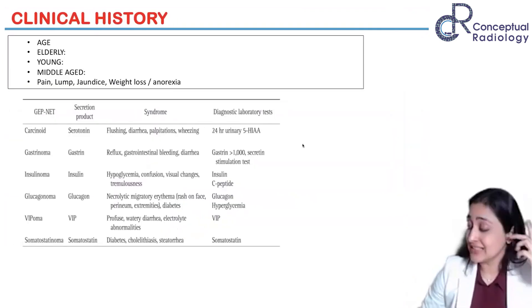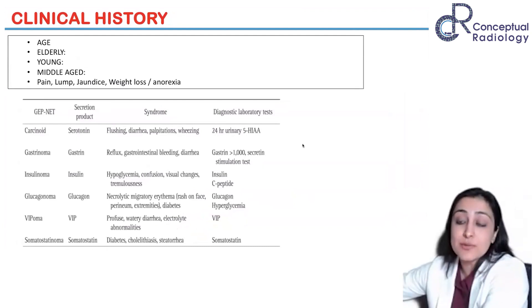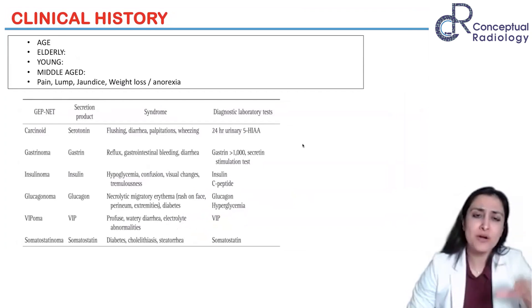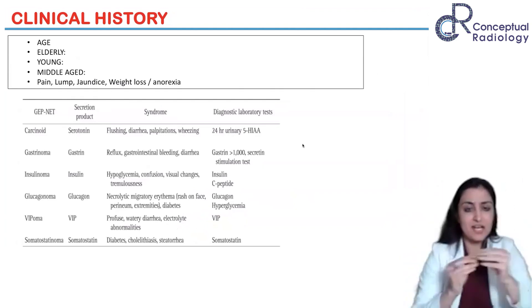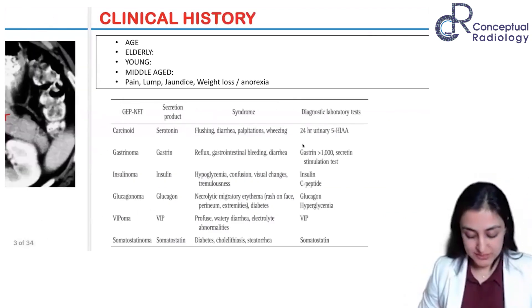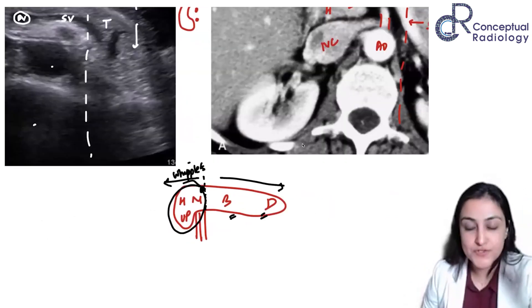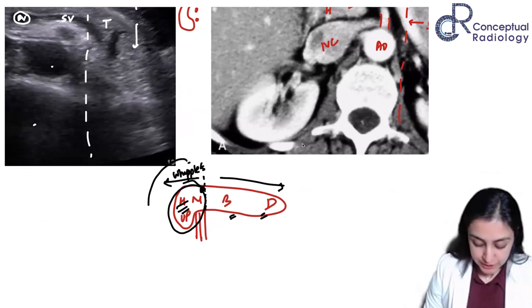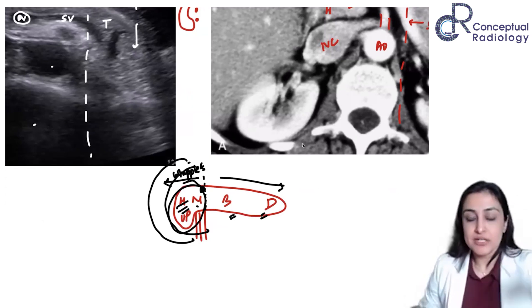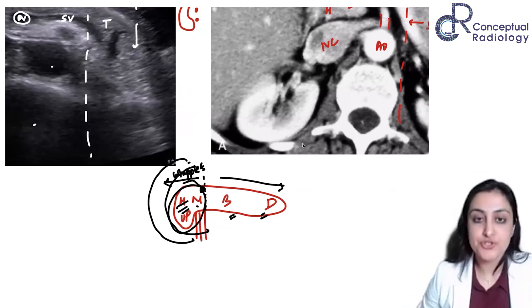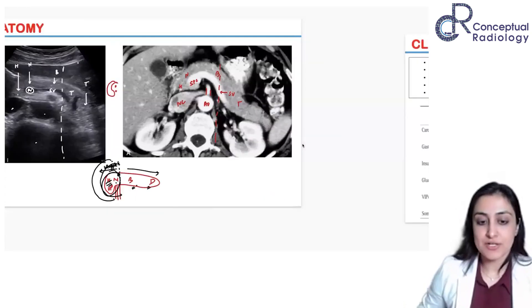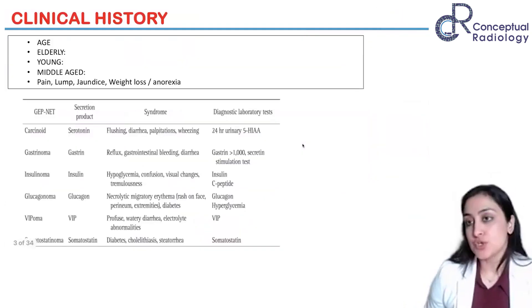Whipple's procedure, or pylorus-preserving pancreaticoduodenectomy, involves removing the duodenum and the pancreas, with anastomoses including hepaticojejunostomy, duodenojejunostomy, and a pancreaticojejunostomy for the remaining tail. The Longmire procedure is different — it's a duct anastomosis done in chronic pancreatitis.